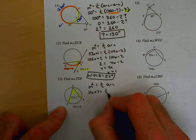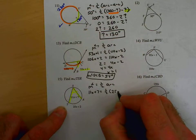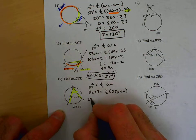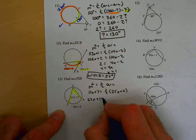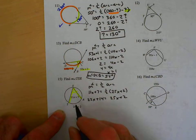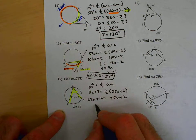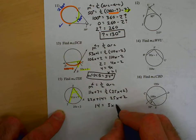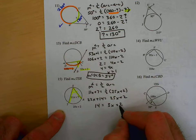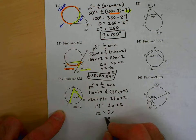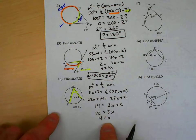Double both sides, you get 22x plus 14 equals 25x plus two. Subtract 22x from both sides, you get 14 equals 3x plus two. Subtract 2 from both sides, 12 equals 3x, so x equals four.